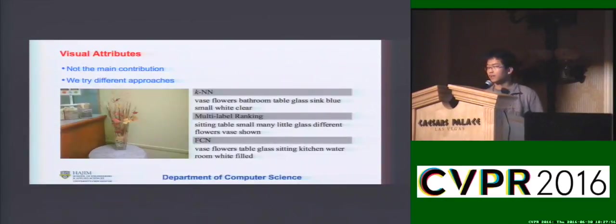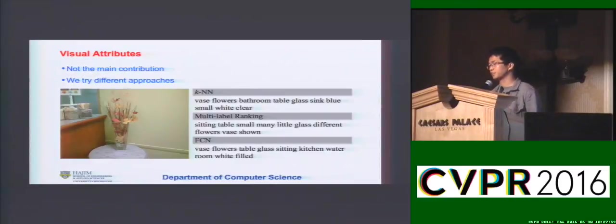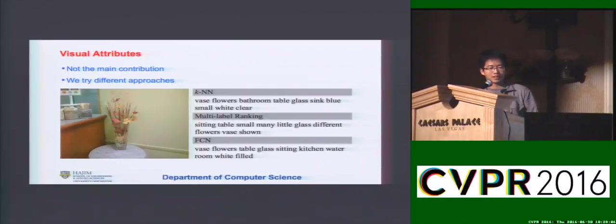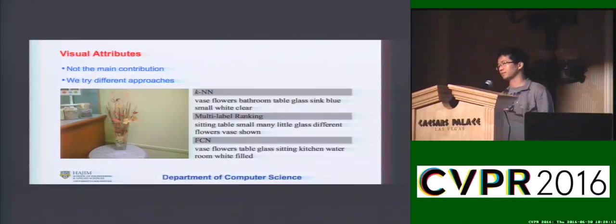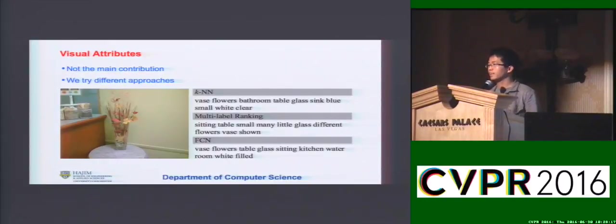The second question is how you are going to generate the visual attributes. This is not the main concern, but in our experiment we use three approaches. Here is an example of one picture and the candidate visual attributes. We can see they are not that accurate — some of the words are not relevant. But we hope that the attention model can select some of the relevant words at each time stamp.